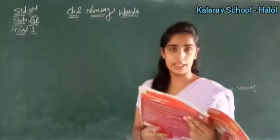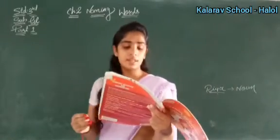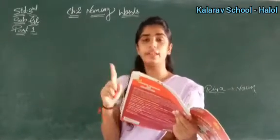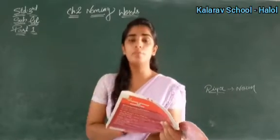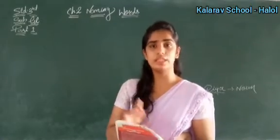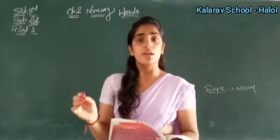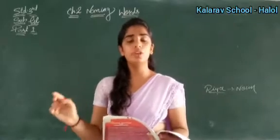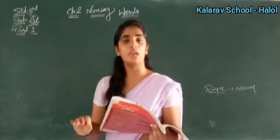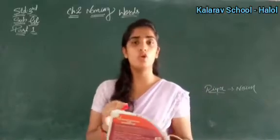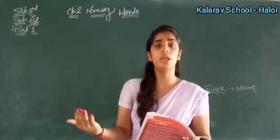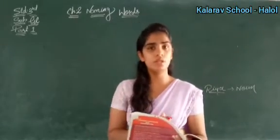Now see what is the first exercise: find and circle the common nouns in red and the proper nouns in blue. Common nouns are the things which you see in your day-to-day life. Jo bhi log cheezein dekhte ho, common cheezein hain — those are known as common nouns.